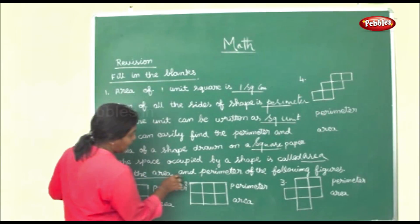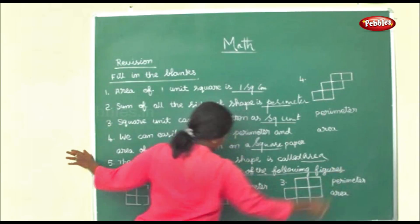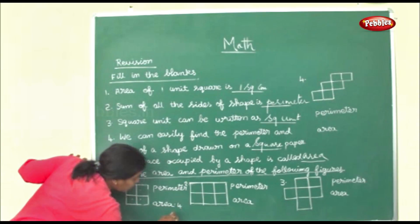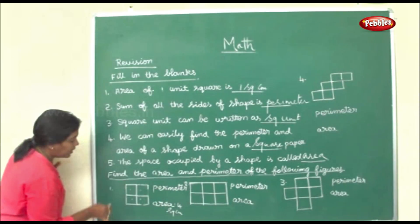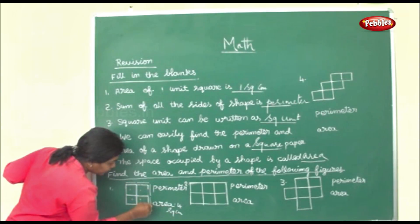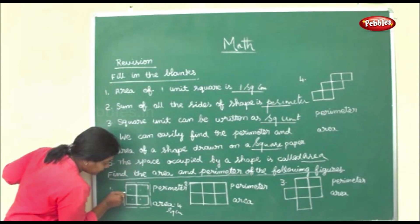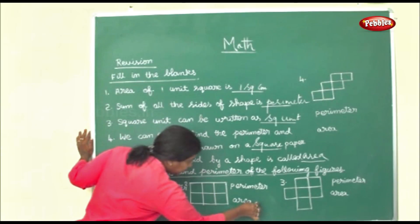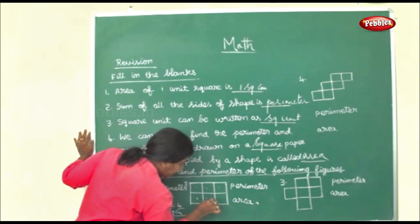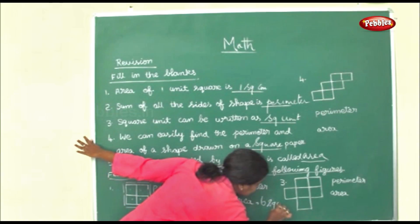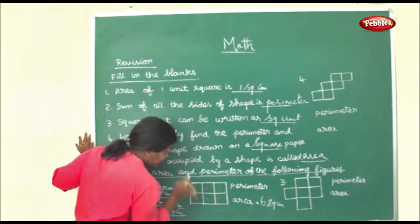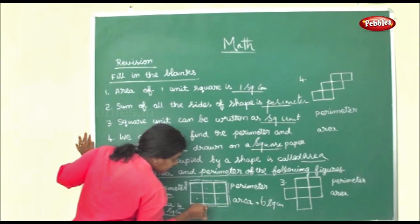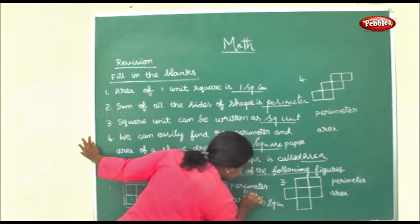Now we shall find the area and perimeter of the following figures. To find the area, we count the inside boxes: one, two, three, four — area is 4 square centimeters. The perimeter: one, two, three, four, five, six, seven, eight — 8 centimeters. Here area again, count the inside boxes: one, two, three, four, five, six — 6 square centimeters. Perimeter: one, two, three, four, five, six, seven, eight, nine, ten — 10 centimeters.